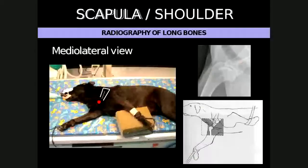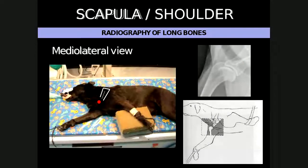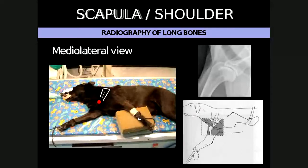Starting with the thoracic limb proximally, we need to always acquire two orthogonal views of the structure of interest. For the scapula or the shoulder, this is the medial lateral view and the craniocaudal view. For the medial lateral view, the patient is placed in lateral recumbency with the affected limb ventrally on the cassette and the unaffected limb pulled cranially. The neck also needs to be dorsiflexed, and this will remove superimposition of the sternum as well as the cervical vertebra from the shoulder joints.